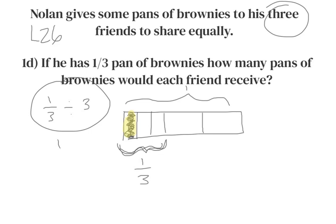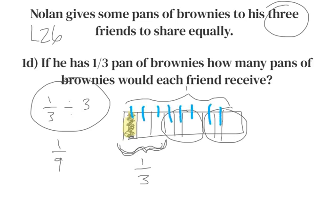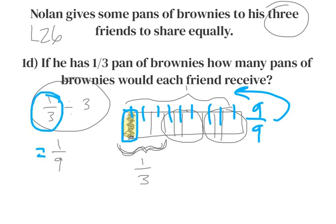This small section represents 1/9, because we have to do the same to this third and this third. Now each third is separated into thirds, and there are a total of nine — nine ninths gives us one whole. So this little piece here is what each friend receives, which is one ninth.